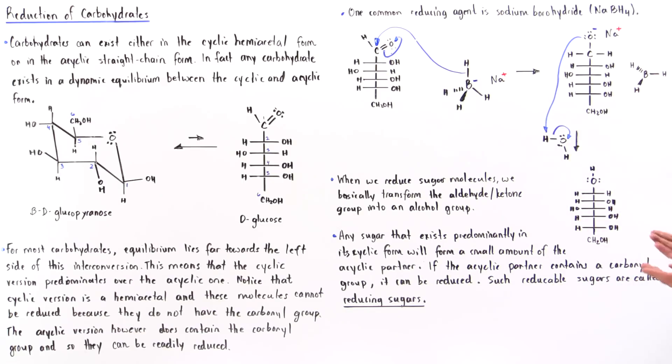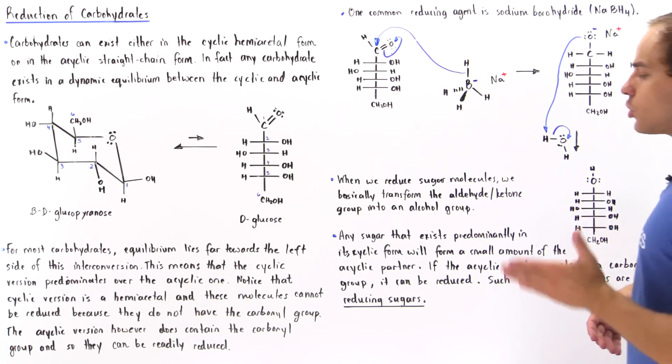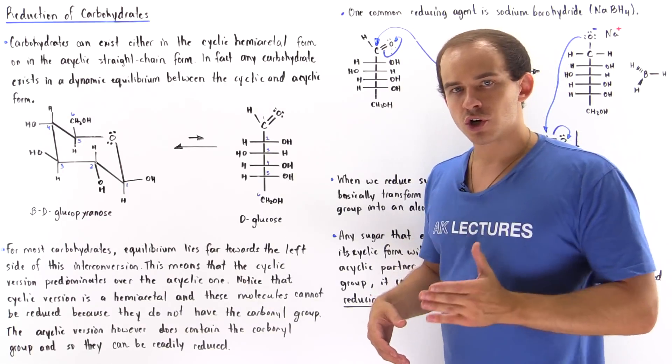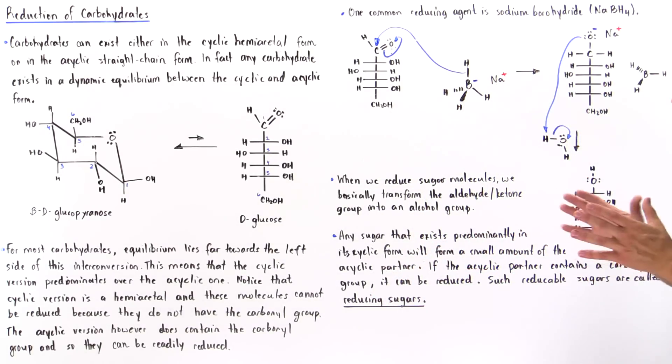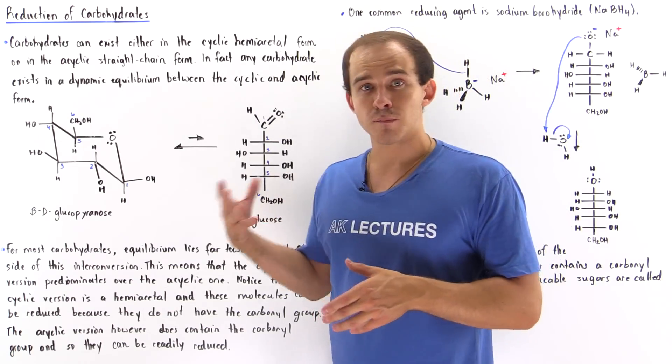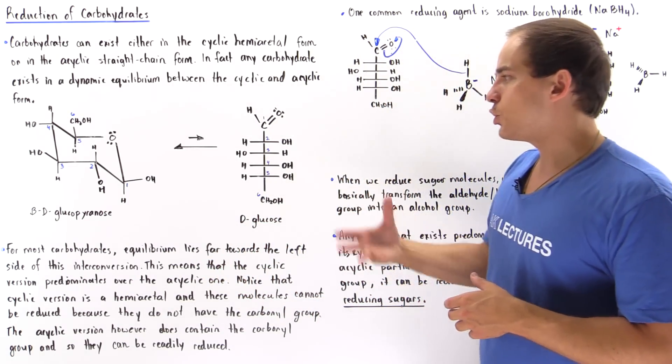Now, any sugar that exists predominantly in its cyclic form will form a small amount of acyclic partner. If the acyclic partner contains a carbonyl group, it can be reduced, and such reducible sugars are known as reducing sugars. So most sugars can in fact be reduced, but we are going to discuss instances in which a sugar molecule cannot be reduced.